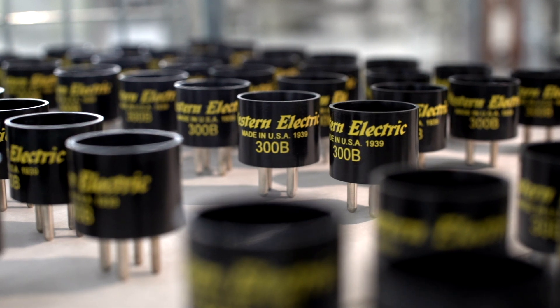When you see the 300B with the dandelion yellow imprint, you immediately know that this is a Western Electric product.